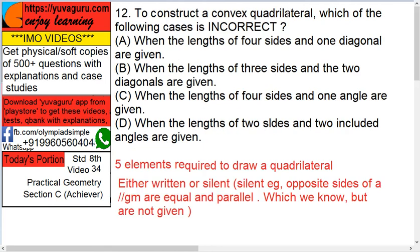To construct a convex quadrilateral, which of the following cases is incorrect?